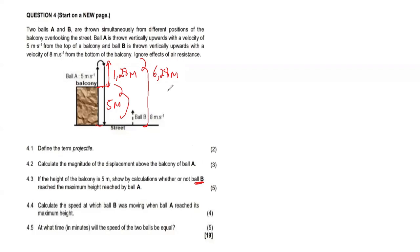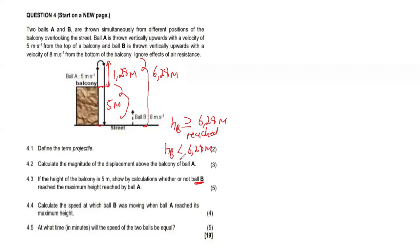If the height of ball B is greater than or equal to 6.28 meters, we say yes, it reached that height. But if the height of ball B is less than 6.28 meters, then it did not reach. That is what we are trying to find out, and this is a 5-mark question.